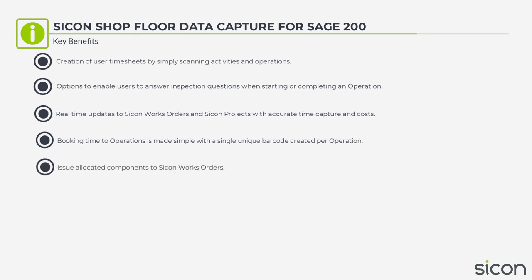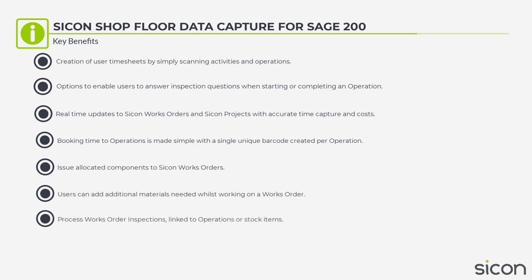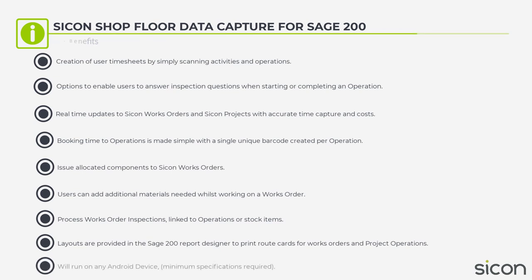Issue allocated components to Saikon Works Orders. Users can add additional materials needed whilst working on a Works Order. Process Works Order Inspections linked to operations or stock items. Layouts are provided in the Sage 200 Report Designer to print route cards for Works Orders and Project Operations. Runs on any Android device — minimum specifications required.